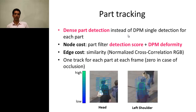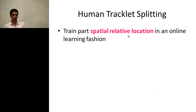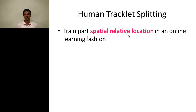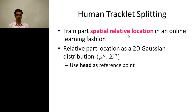After tracking of the parts, we get one track for each part or zero tracks for that part in specific frames. Zero part track means that part of the person is occluded by some other object or person. We use the information from part tracking to improve person tracking, specifically to split the human tracklets. For that, we train a part spatial relative location model for the person in an online fashion.